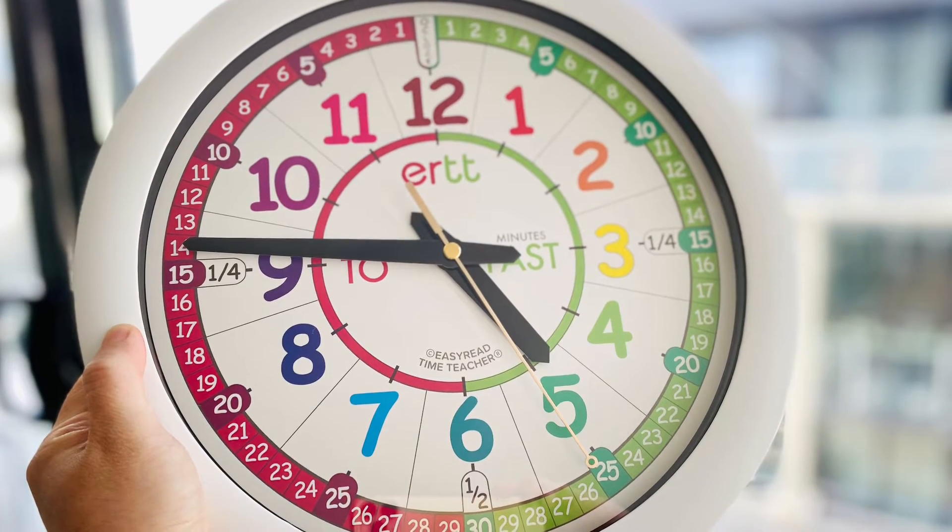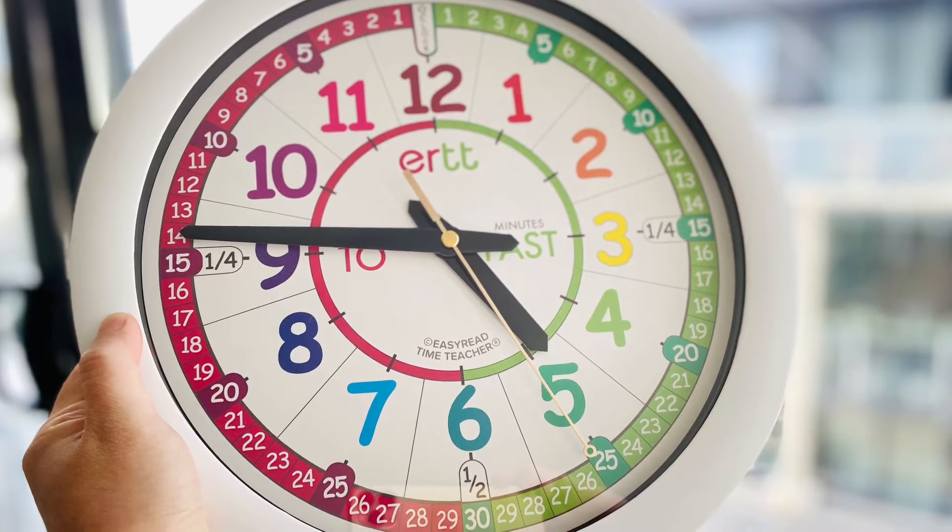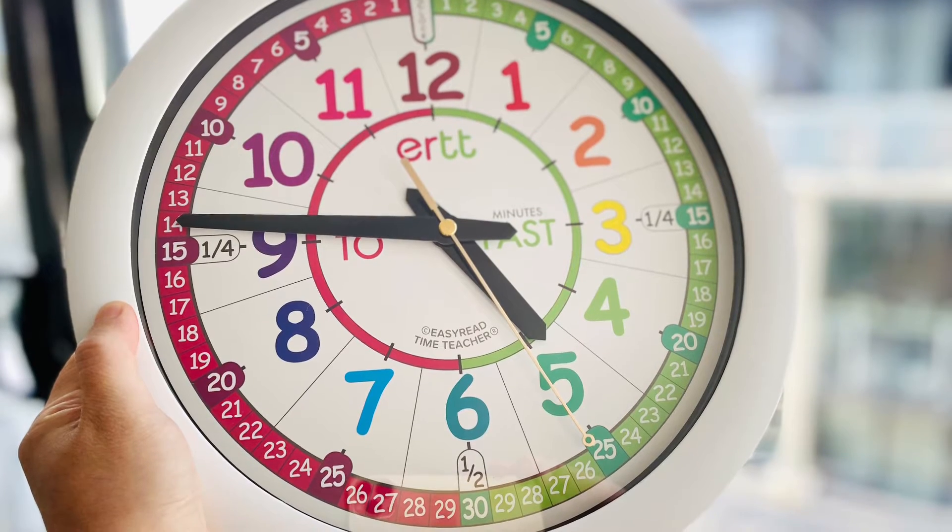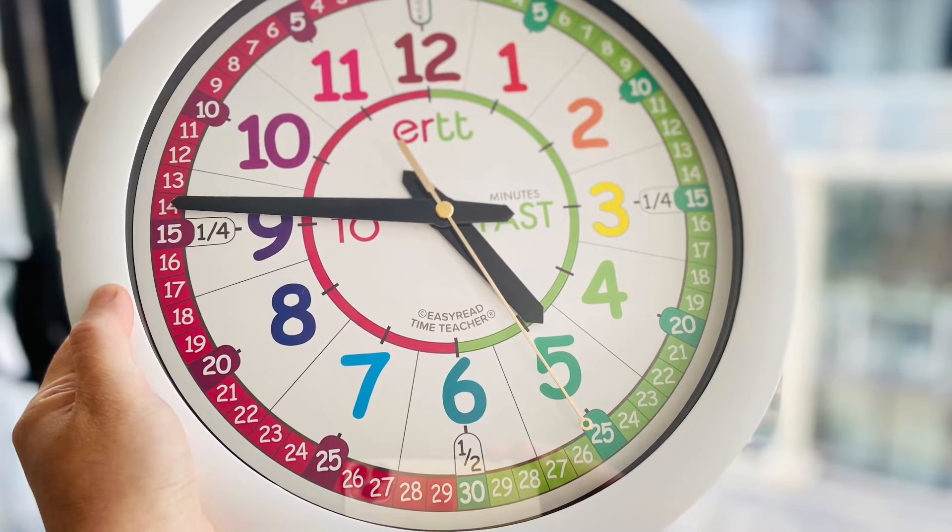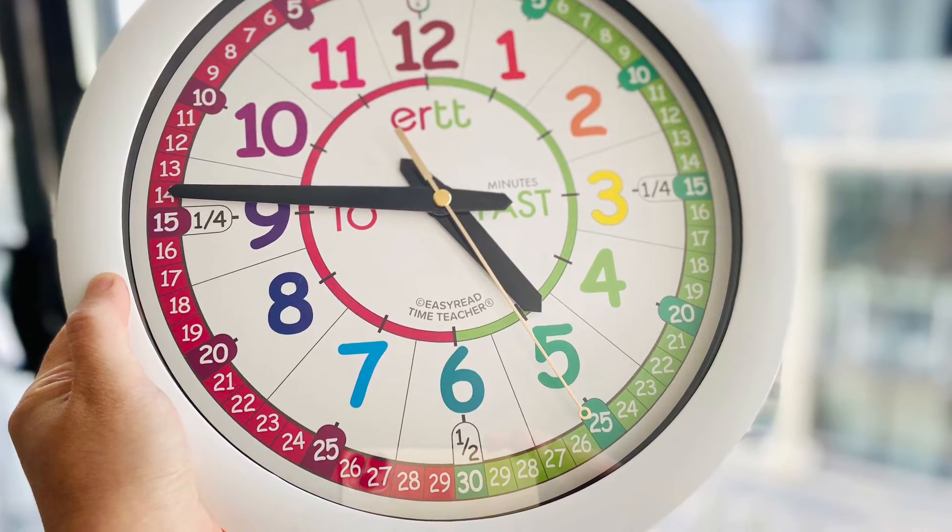For example, the picture above shows a time of 14 minutes to 5, long hand pointing to 14 at the outer ring of red zone, and a short hand pointing towards the big 5 area.